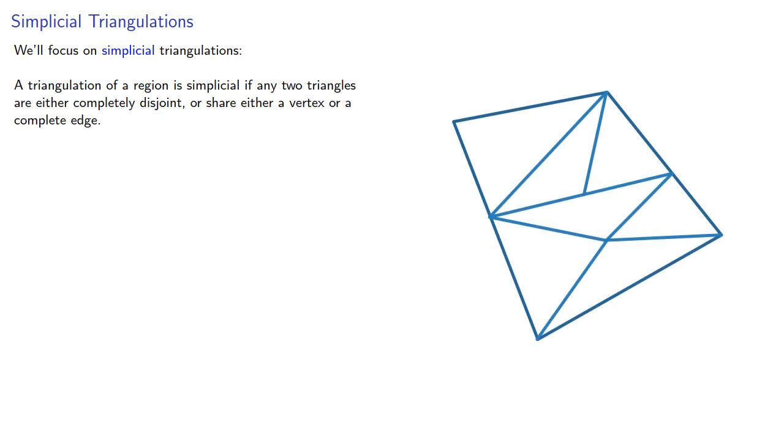For example, this triangulation is not simplicial because these two triangles share part of an edge but not a complete edge. But we can modify our triangulation to make it simplicial.